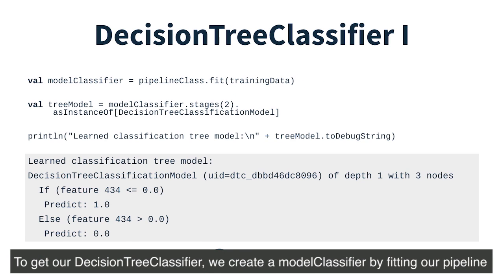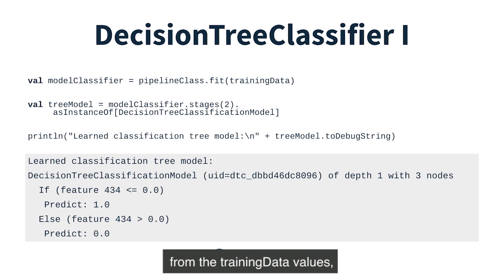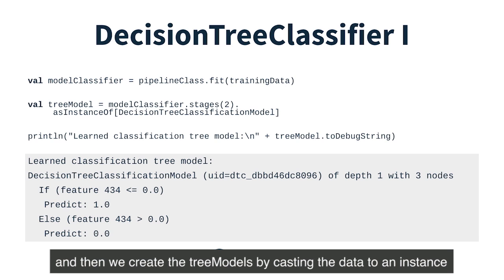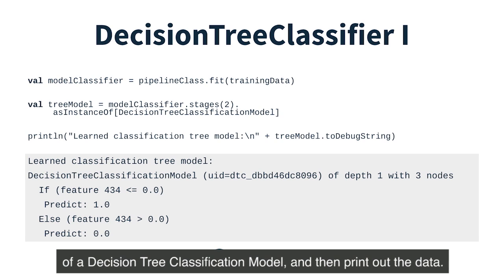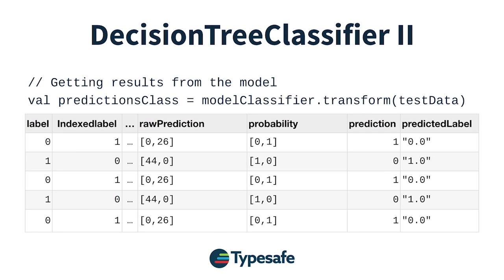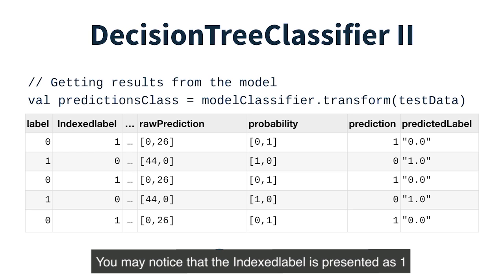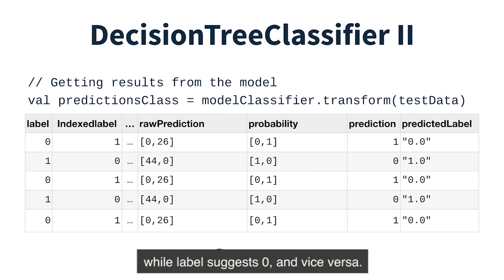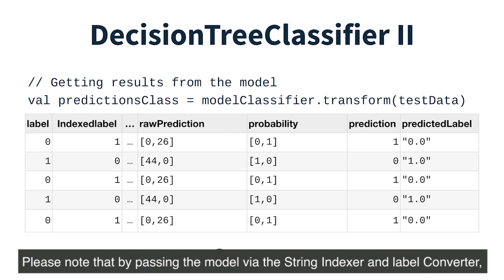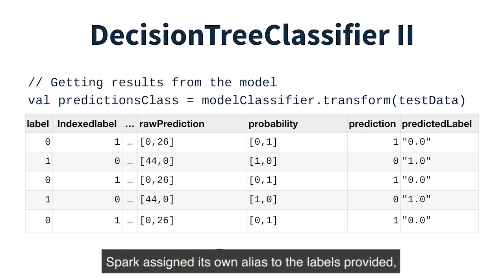To get our decision tree classifier, we create a model classifier by fitting our pipeline from the training data values. We then create the tree models by casting the data to an instance of a decision tree classification model and print out the data. You may notice that the indexed label is presented as 1 while label suggests 0, and vice versa. Note that by passing the model via the string indexer and label converter, Spark assigned its own alias to the labels provided.